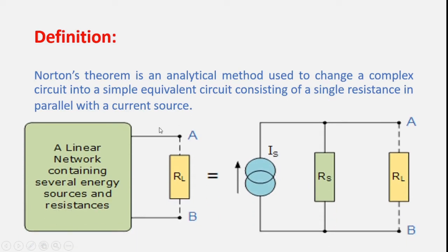Here I am showing the circuit diagram. This is your current source. This is your resistance connected in parallel. Then this is your load resistance. In Thevenin's theorem, what happens? A voltage source with a series resistance. But in Norton's theorem, a current source with a parallel resistance.